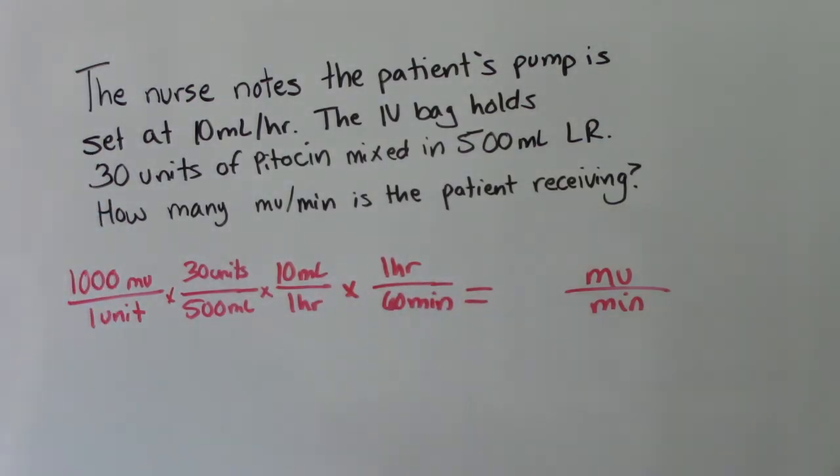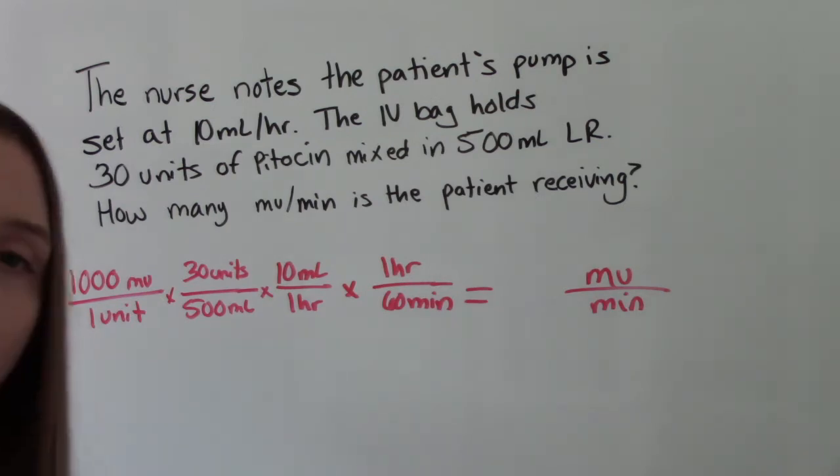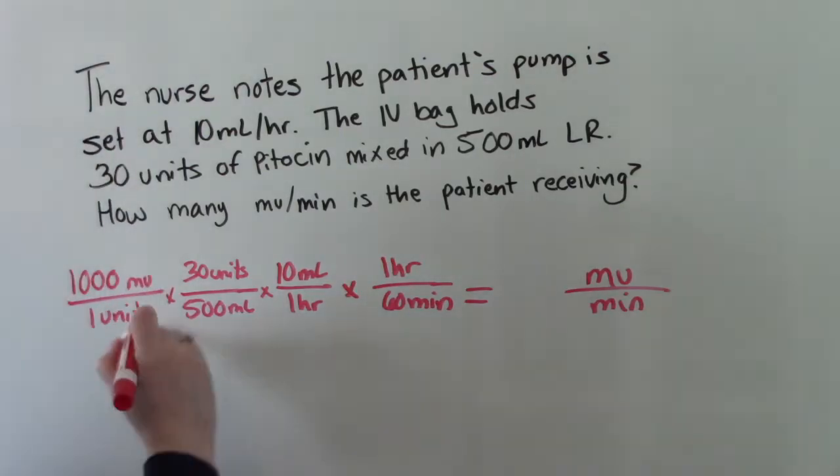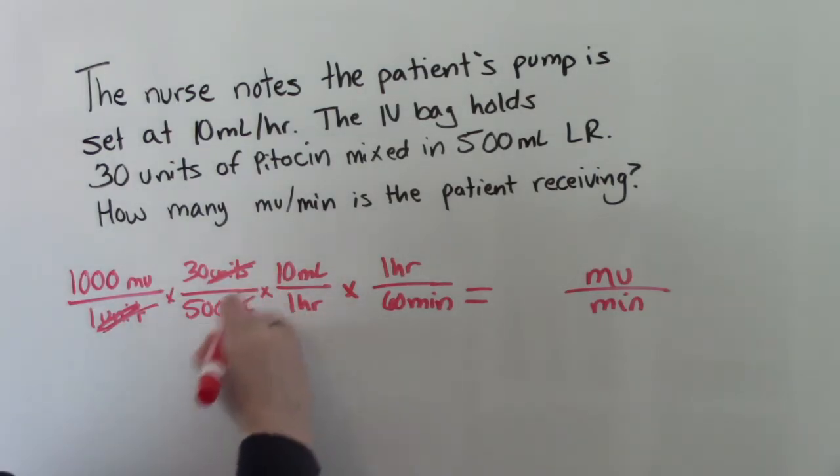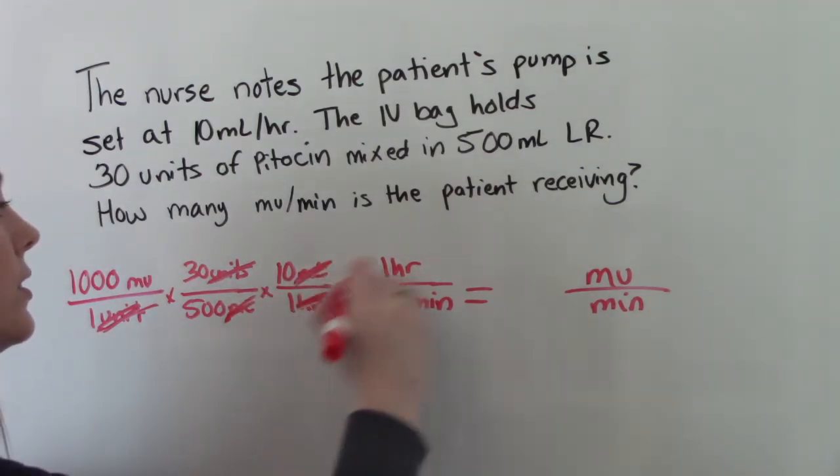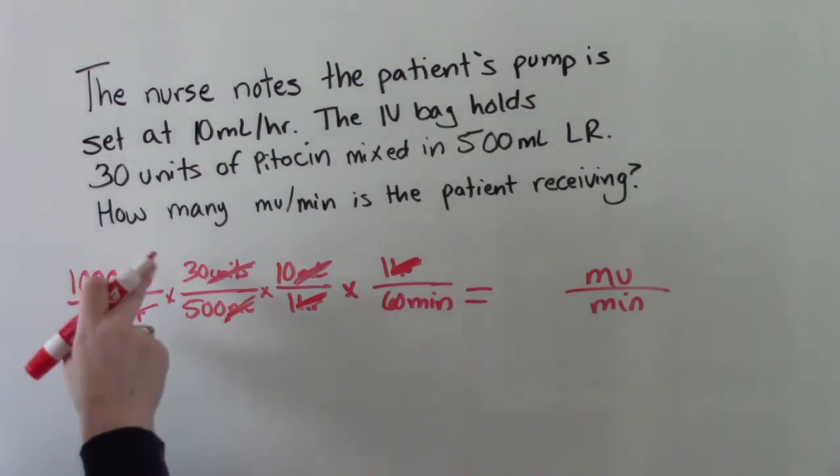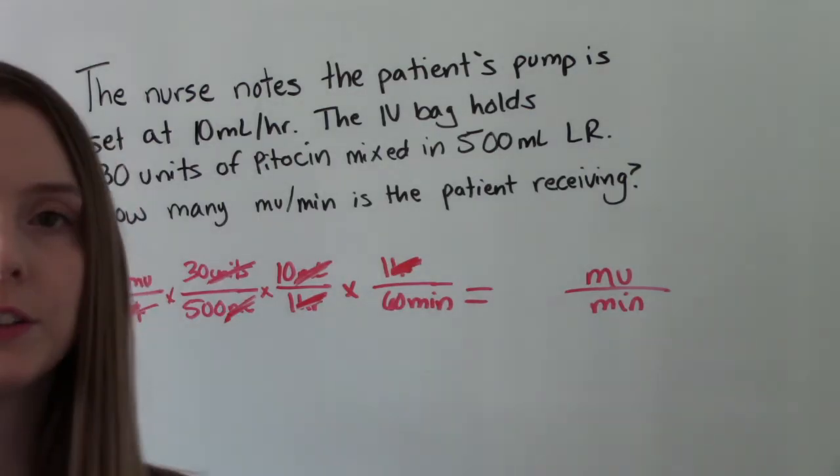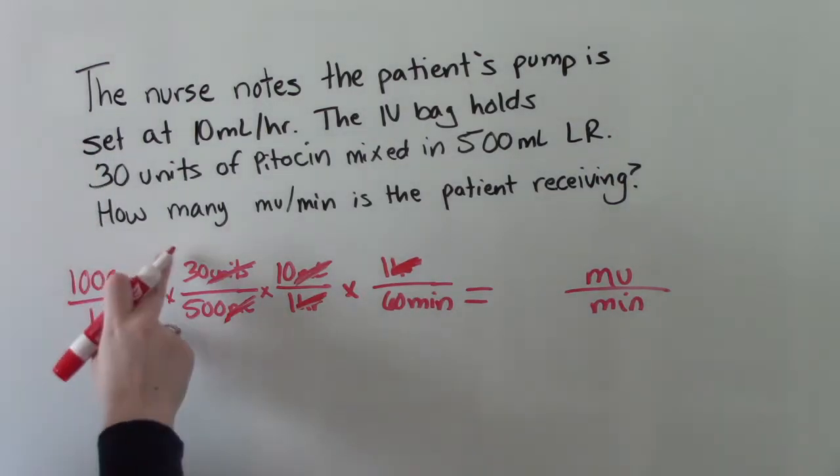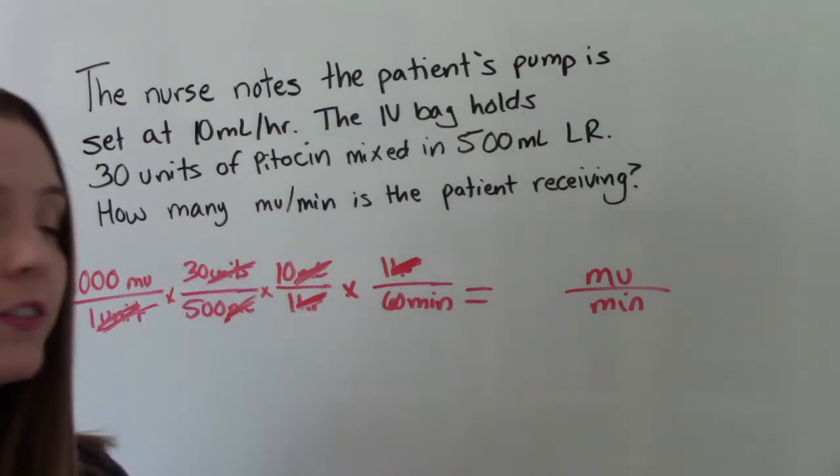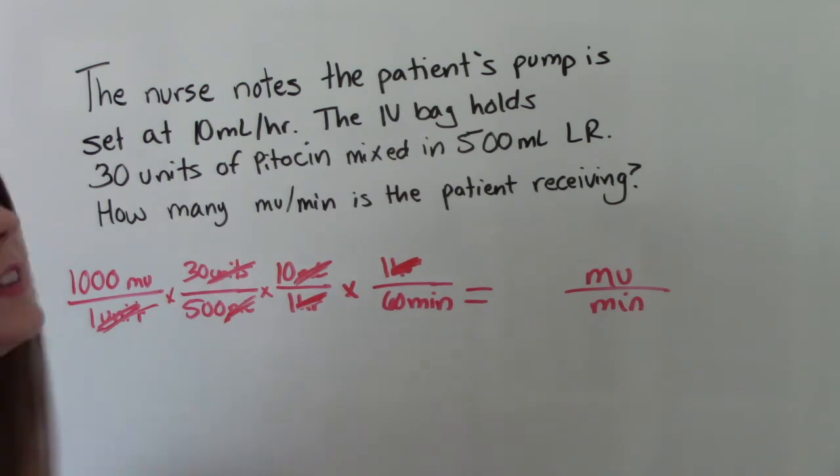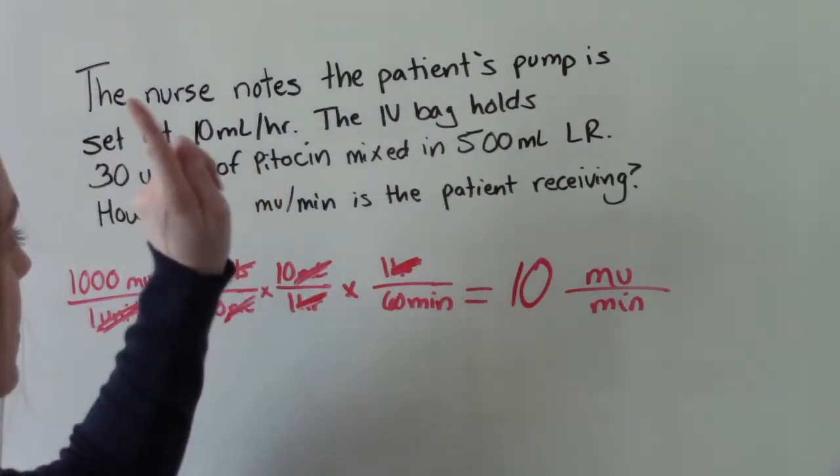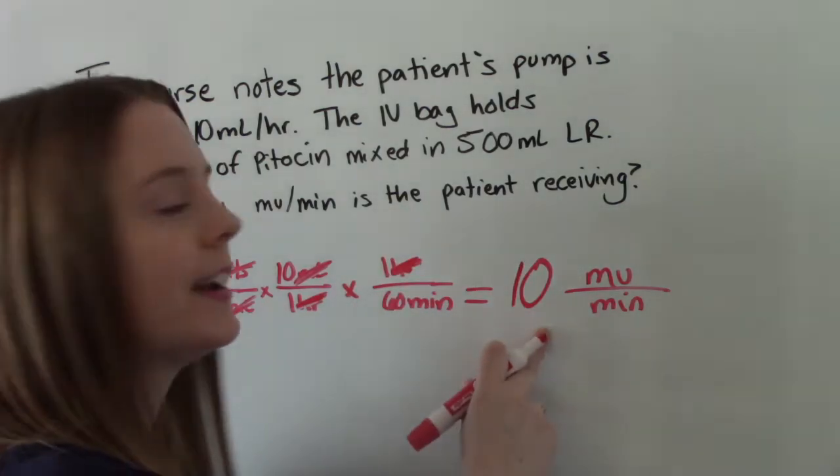Setting it up is the key. If you can figure out how to set it up so everything can cross off, you'll be able to do these problems easily. So let's start crossing some stuff off. So unit, mLs, and then hours. That will leave us with milli units in our numerator and minutes in our denominator. That's exactly what we want. Now we have to do a little bit of math. So 1,000 times 30 times 10 divided by 500 times 60. So when you do that, you should get 10. So how many milli units per minute is the patient receiving? They're receiving 10 per minute.